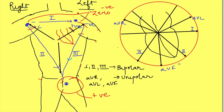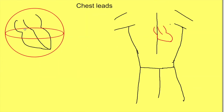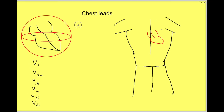So we have discussed six limb leads, of which three are unipolar and three are bipolar. These limb leads look at the depolarization of the heart in the vertical plane only - that is, how depolarization is moving from up to down and right to left. To study how depolarization is moving in the anteroposterior direction, we need chest leads. There are six chest leads, V1 to V6, and all of them are unipolar leads that look at depolarization in the anteroposterior plane.